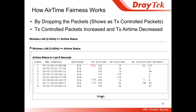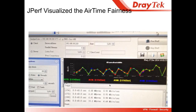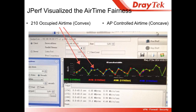Comparing to index number six, it wasn't getting controlled, so its airtime increased. Another station remained at 47 packets controlled — meaning during that period it didn't get controlled and its airtime got increased. It's like the access point stopped some stations from using the airtime, so other stations got more chance to use it. Also, Jperf visualized the airtime fairness — the convex part is the airtime occupied by station 210, and the concave part is where the access point controlled the airtime.